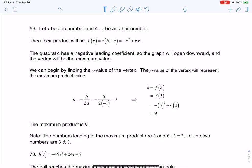Hey Math 31, I had a question on how to do number 69. This was saying among all pairs of numbers whose sum is 6, find the pair with the largest product.